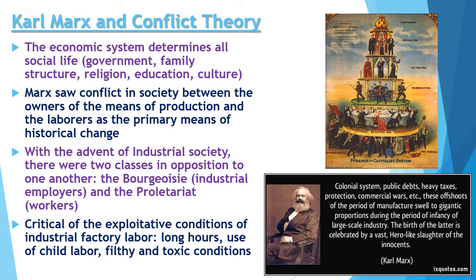To reiterate Marx and conflict theory: the economic system determines all social life — government, family structure, religion, education, and culture. Marx saw conflict between owners of the means of production and the laborers as the primary means of historical change. With the advent of industrial society and modernization, there became two classes in opposition: the bourgeoisie (industrial employers and landowners) and the proletariat (the workers). He was critical of the exploitative conditions of industrial factory labor — long hours, child labor, and filthy toxic factory conditions.